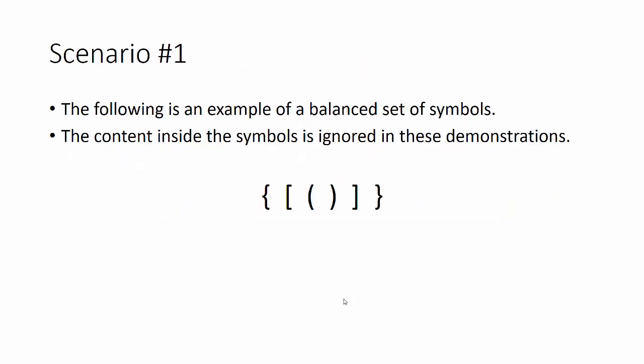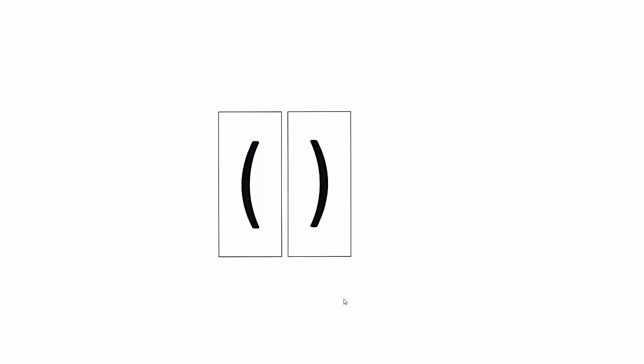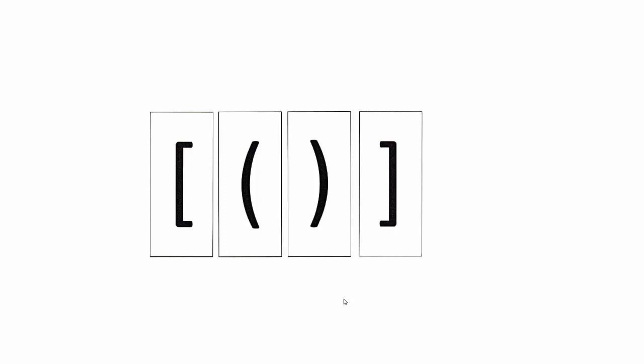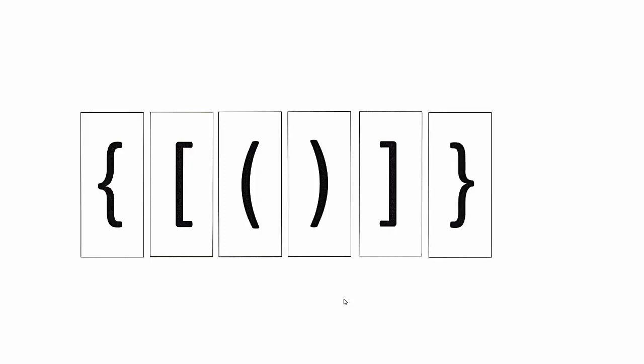Here's exactly what we're looking at. This is a balanced set of parentheses. We have a curly bracket, a left square bracket, a left parentheses, a right parentheses, a right square bracket, and a right curly brace — and they are balanced. The left parentheses and right parentheses encompass an expression, the square brackets encompass that expression, and the curly braces encompass the whole thing. That is balanced.